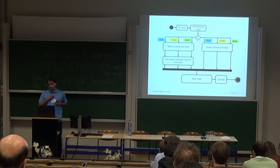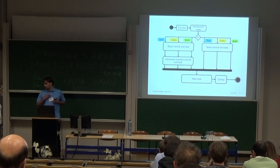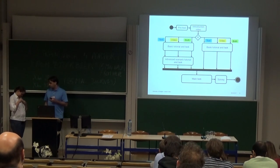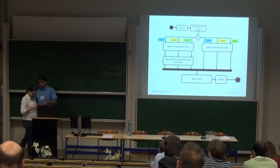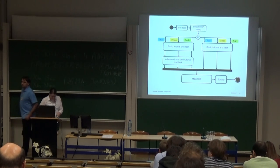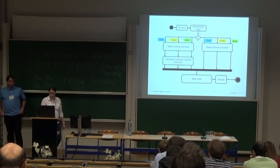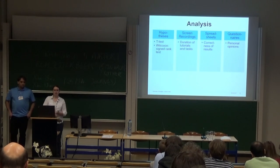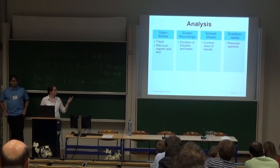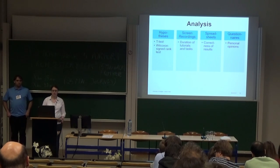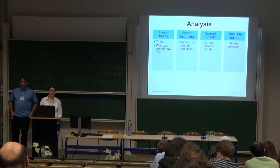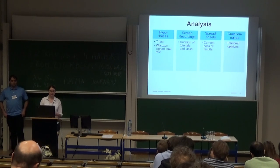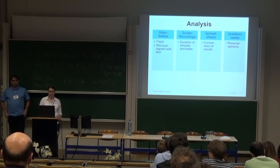Now Verena will continue and tell you how we did the analysis. We have basically four types of analysis. We had hypotheses that we wanted to test, and we did some statistical tests — for example T-tests or the Wilcoxon Signed-Rank test, depending on whether our data was normally distributed or not.